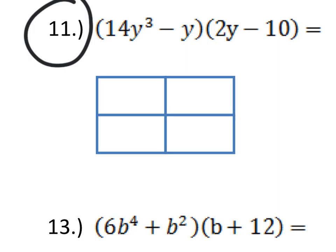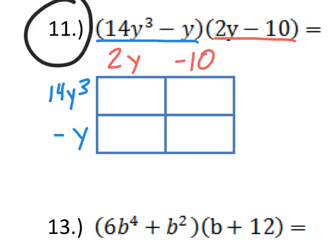Now, let's do the same thing, but on a bigger scale. We'll multiply a couple binomials. First, we'll do one with the area model. Let's zoom in a little further. So, number 11. We'll write 14y to the 3rd power right here, and then minus y or negative y right there. So, that consists of this binomial, and now let's put this binomial on top, 2y times negative 10.